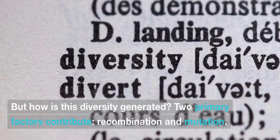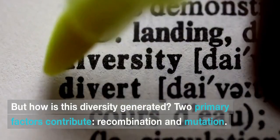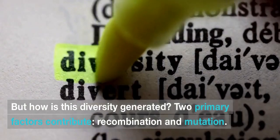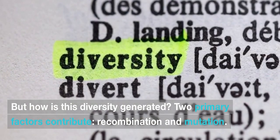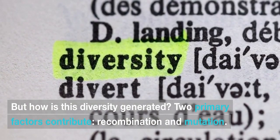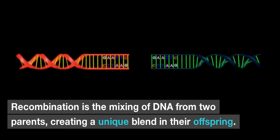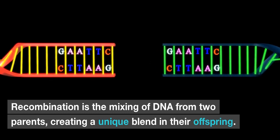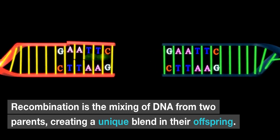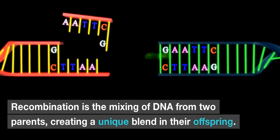But how is this diversity generated? Two primary factors contribute: recombination and mutation. Recombination is the mixing of DNA from two parents, creating a unique blend in their offspring.